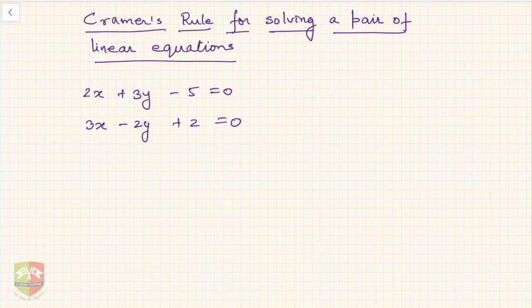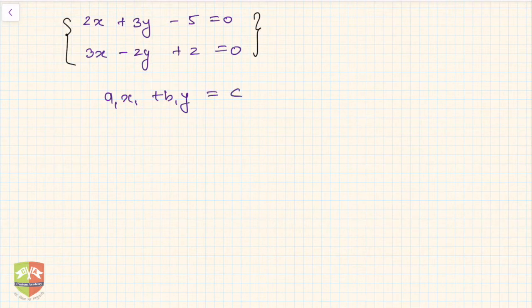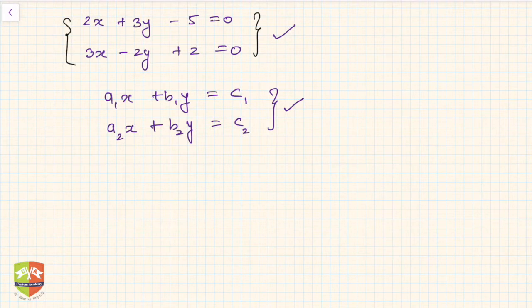We have a pair of linear equations as examples, but before we take up the examples, let us first do a generalized study. Let us write two linear equations in two variables: a₁x + b₁y = c₁ and a₂x + b₂y = c₂. Notice that the constant terms are written on the right-hand side.